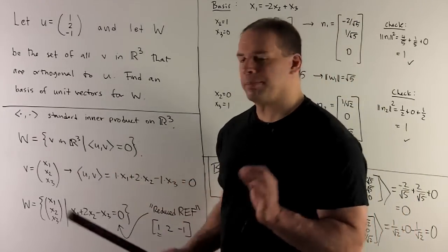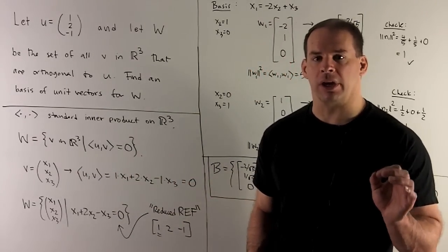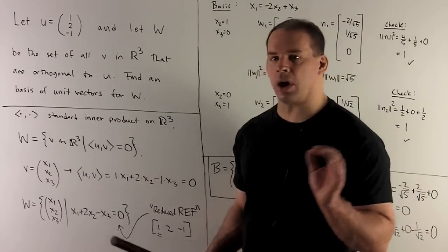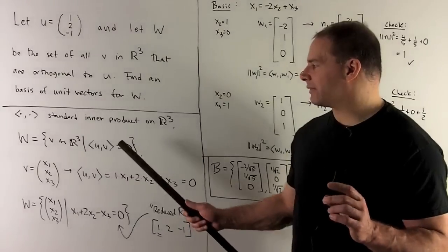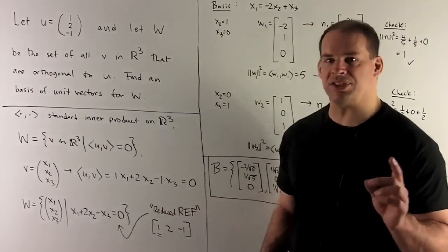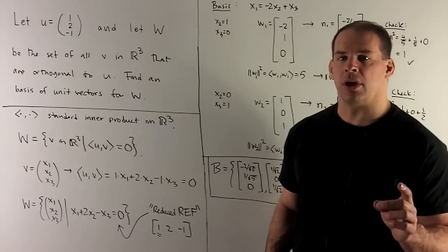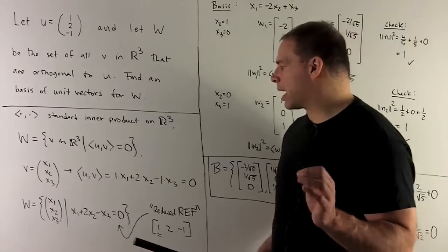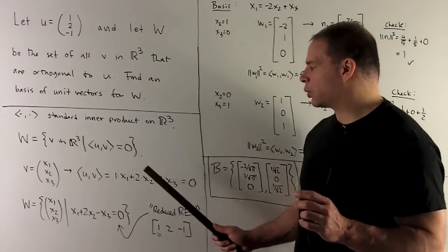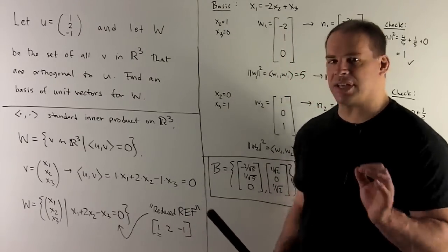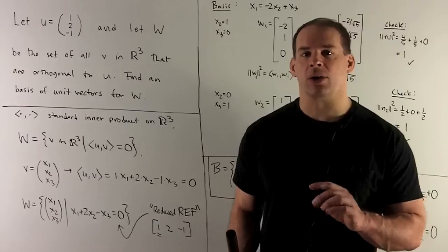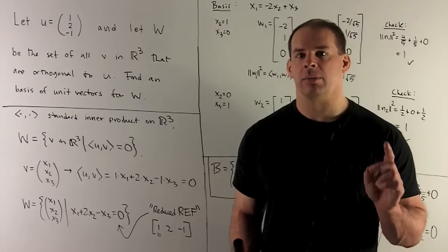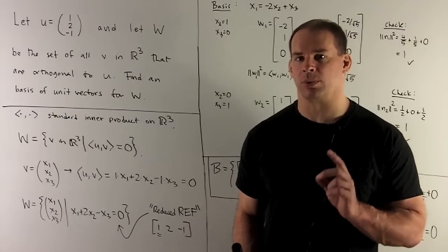We're going to let angle brackets denote the standard inner product for R3. Then W is defined as the set of all V in R3 such that the inner product of U and V equals zero. If we let V equal the vector (X1, X2, X3), taking the inner product gives X1 + 2X2 - X3, and for orthogonality we set that equal to zero. So we're solving X1 + 2X2 - X3 = 0.